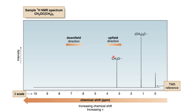The tall peak, which you can see here, appears at 1.2 ppm, which is due to the tertiary butyl group. The small peak is at 3.2 ppm, which is due to the methoxy group. As you can see, the chemical shift is plotted from right to left.